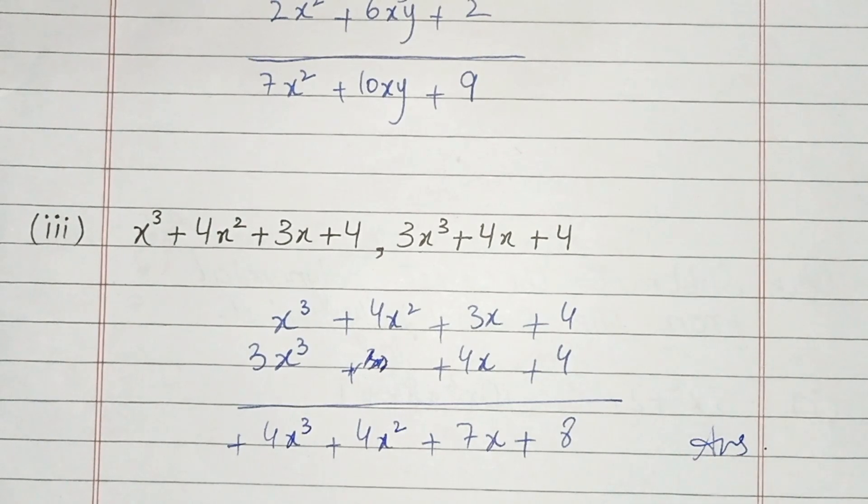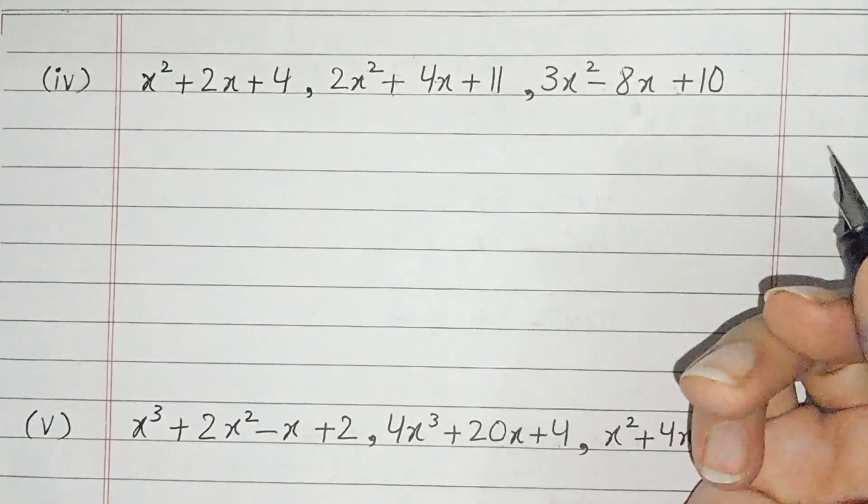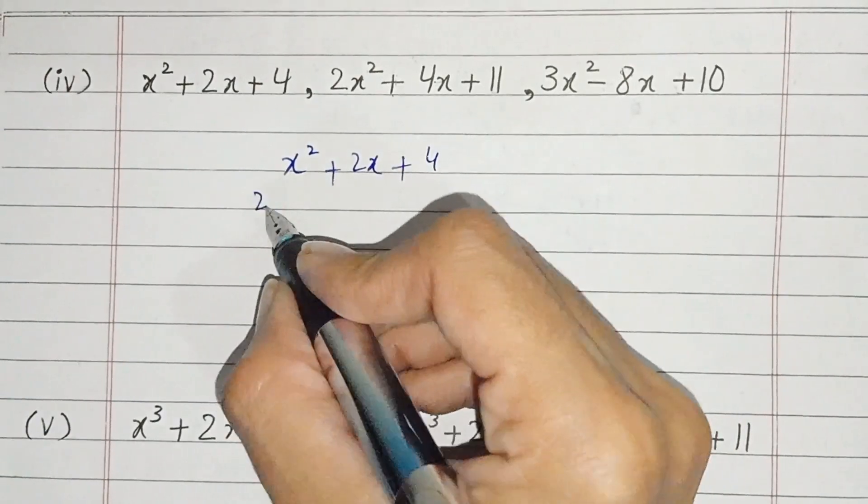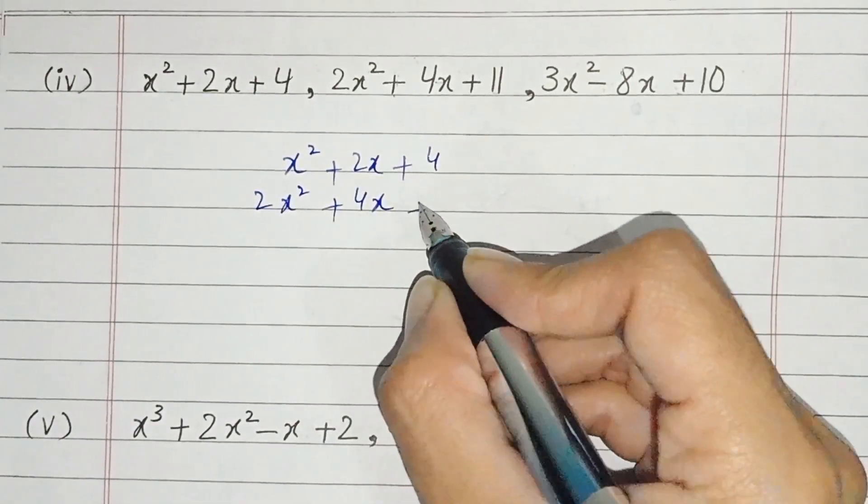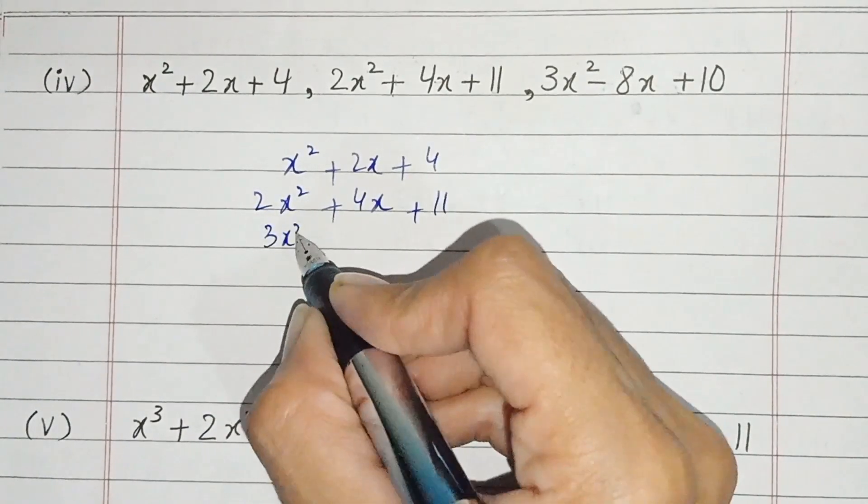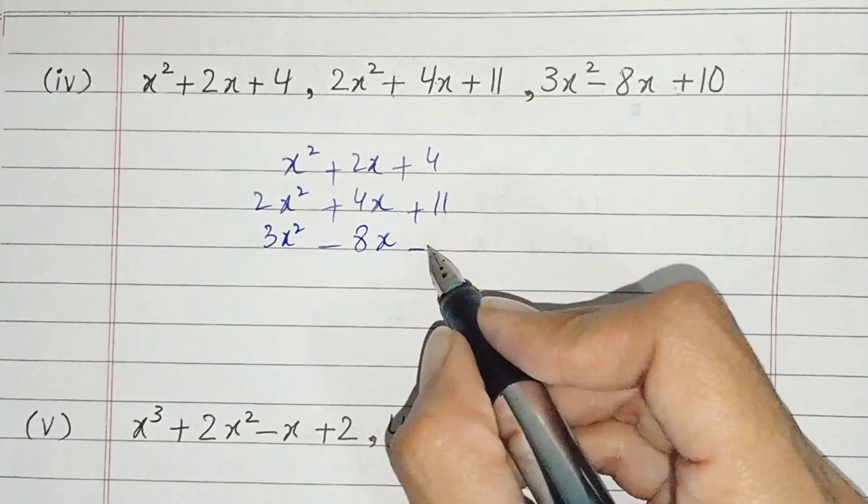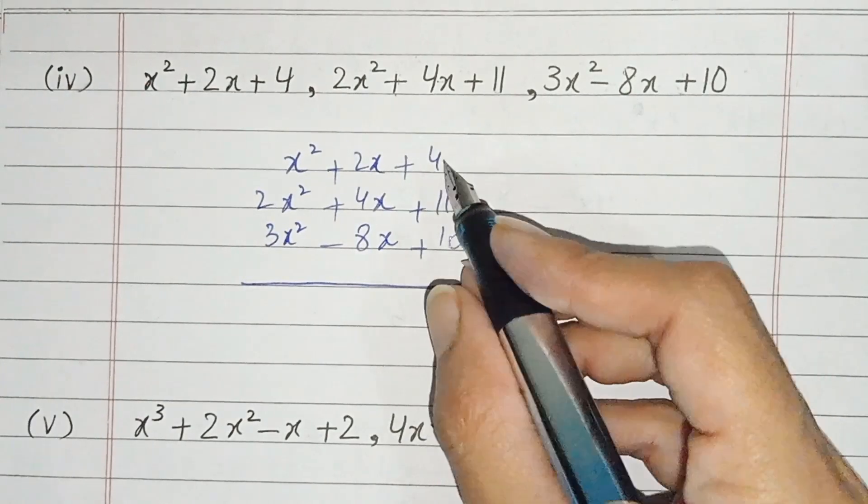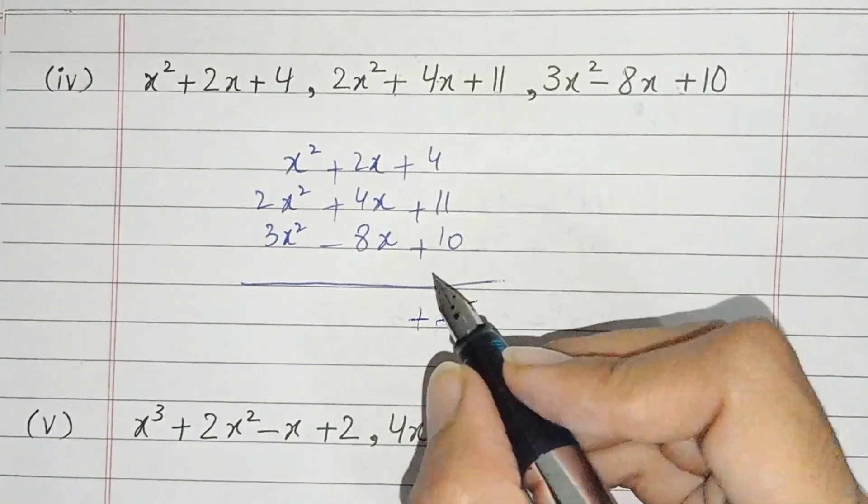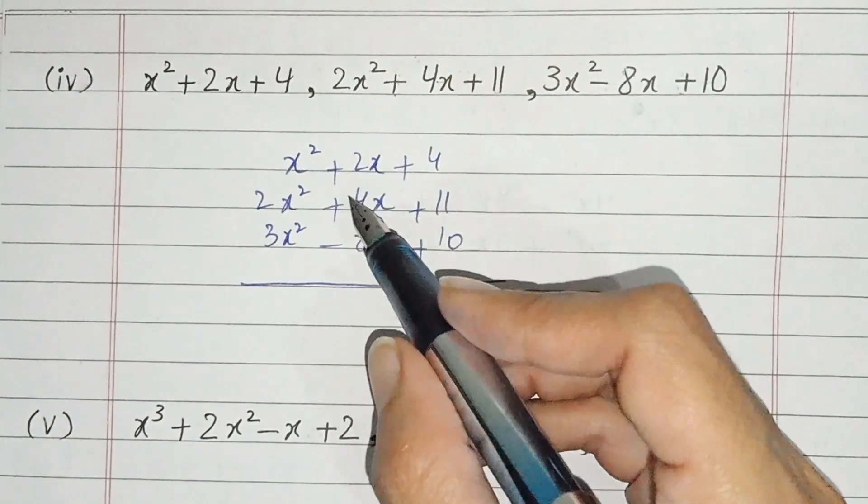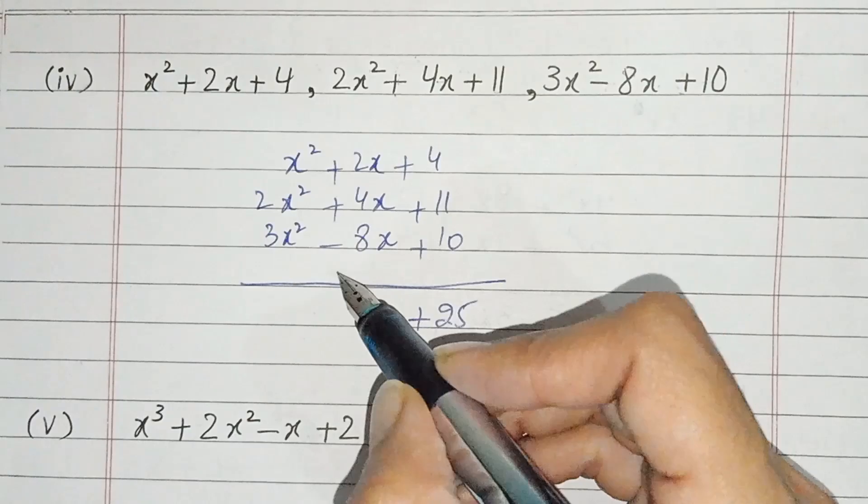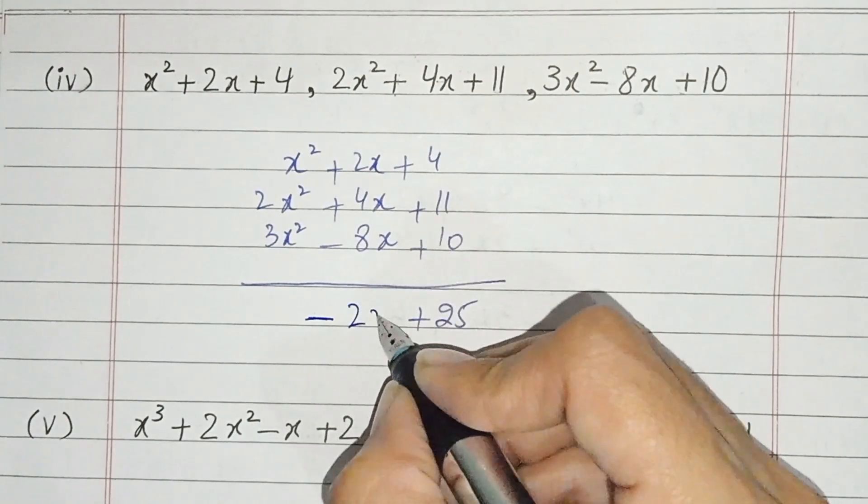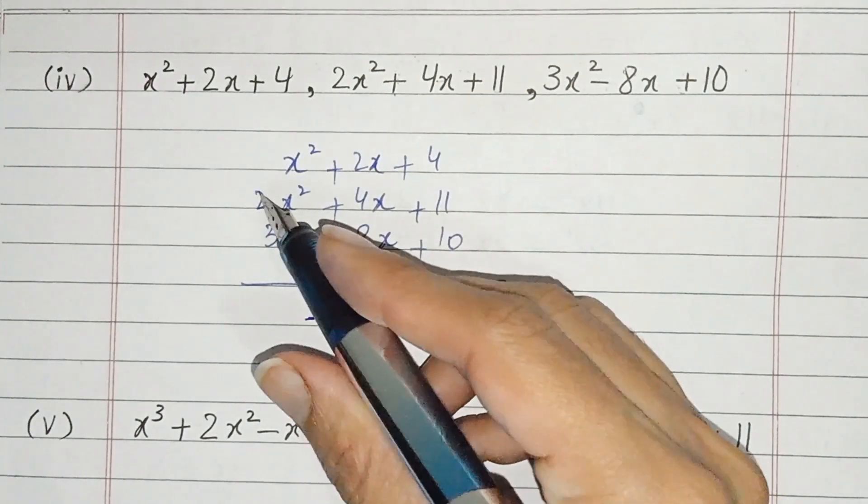Now since fourth part. We have three terms: x square plus 2x plus 4. We write it down like terms: 2x square plus 4x plus 11 and 3x square minus 8x plus 10. We solve: 10 plus 11 plus 4 is 25. We add them: 1 plus 2 plus 3 is 6x square. For x, the larger value is minus, so the sign will be minus. 8 minus 2 minus 4 gives us 2x.